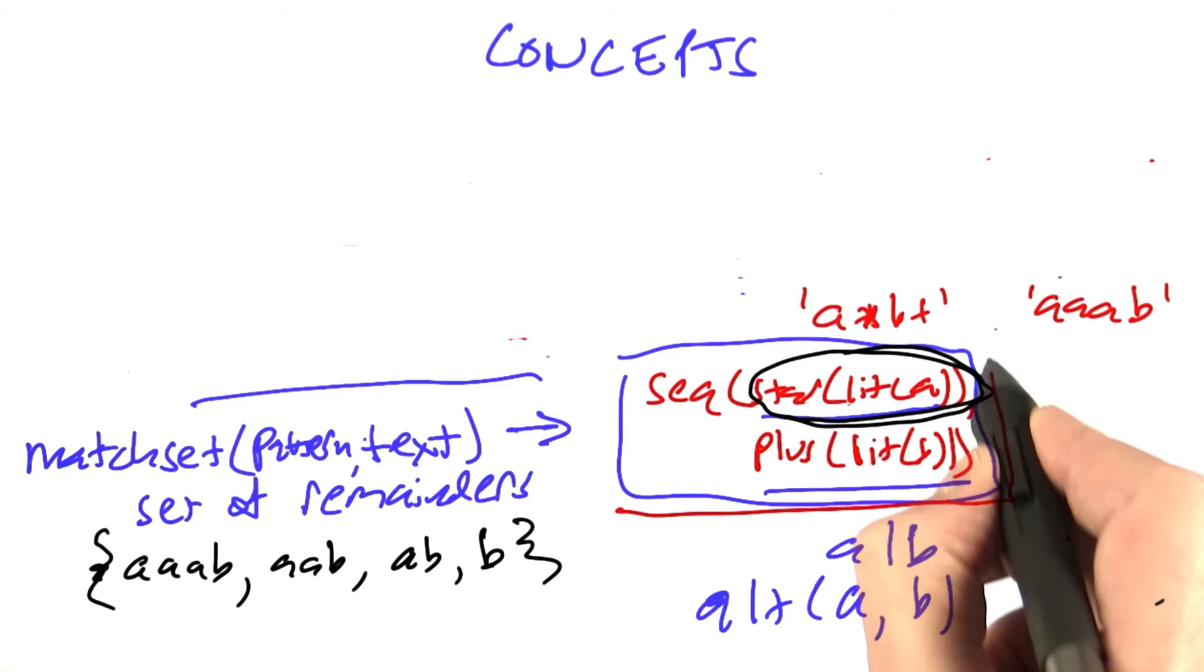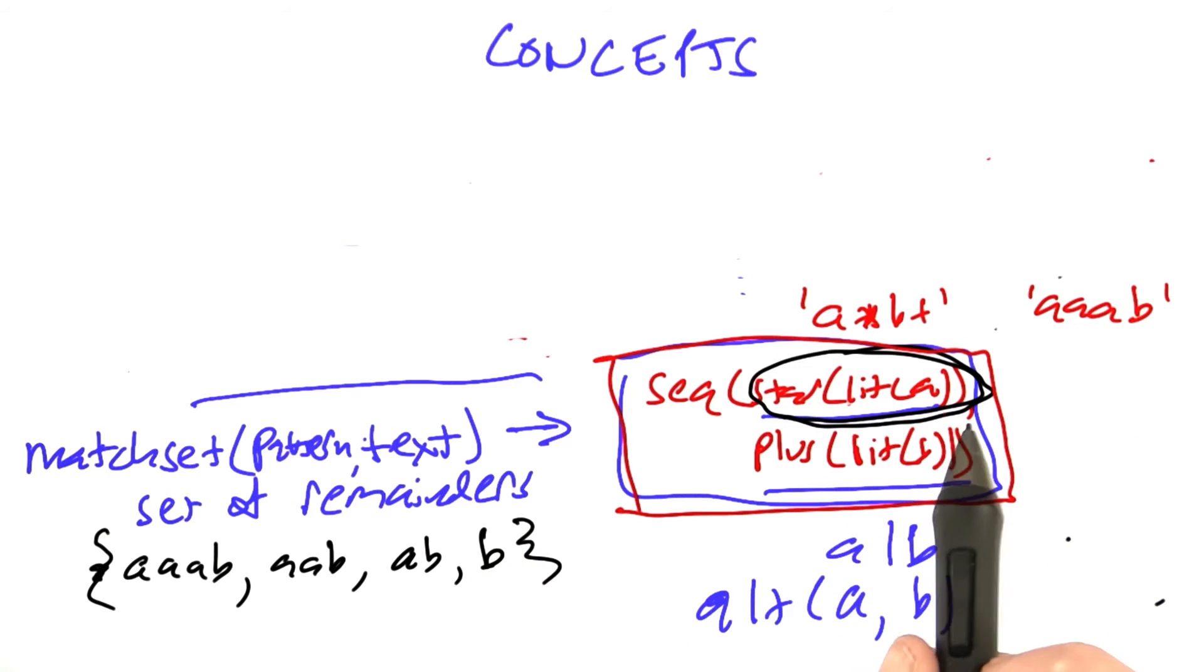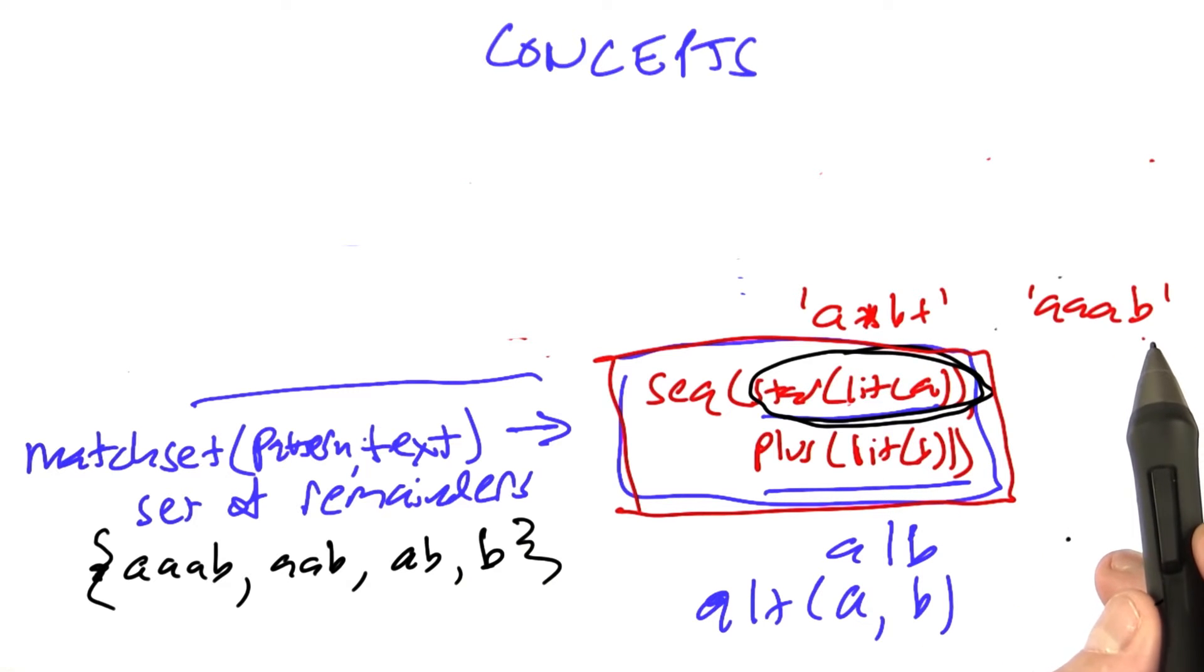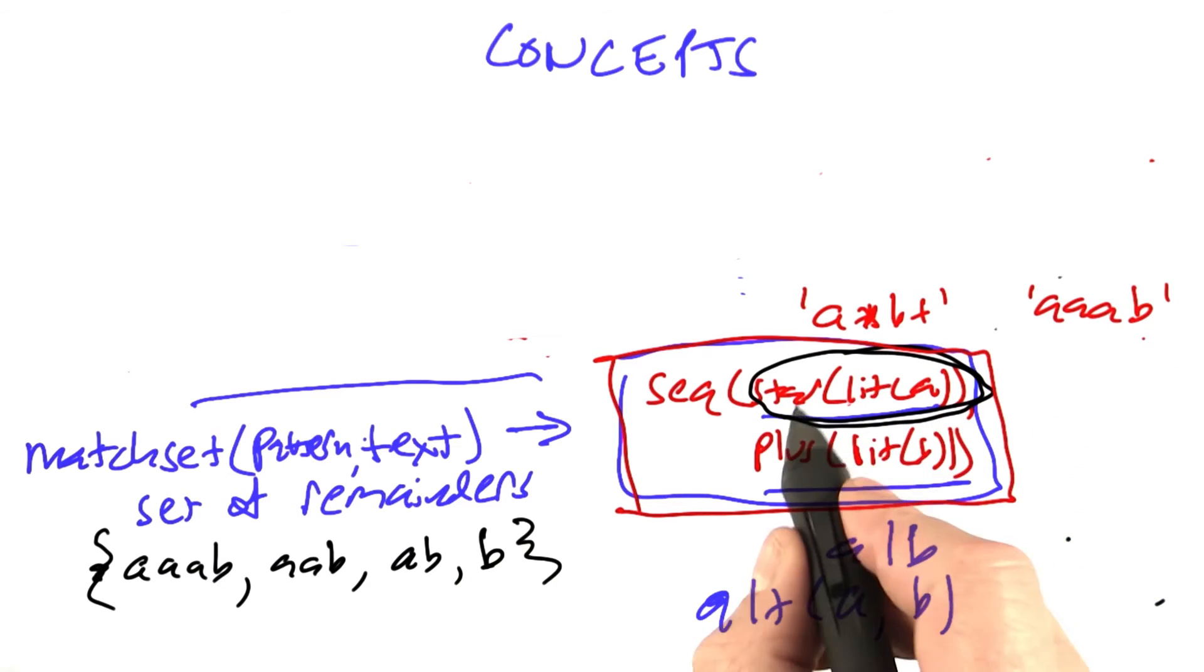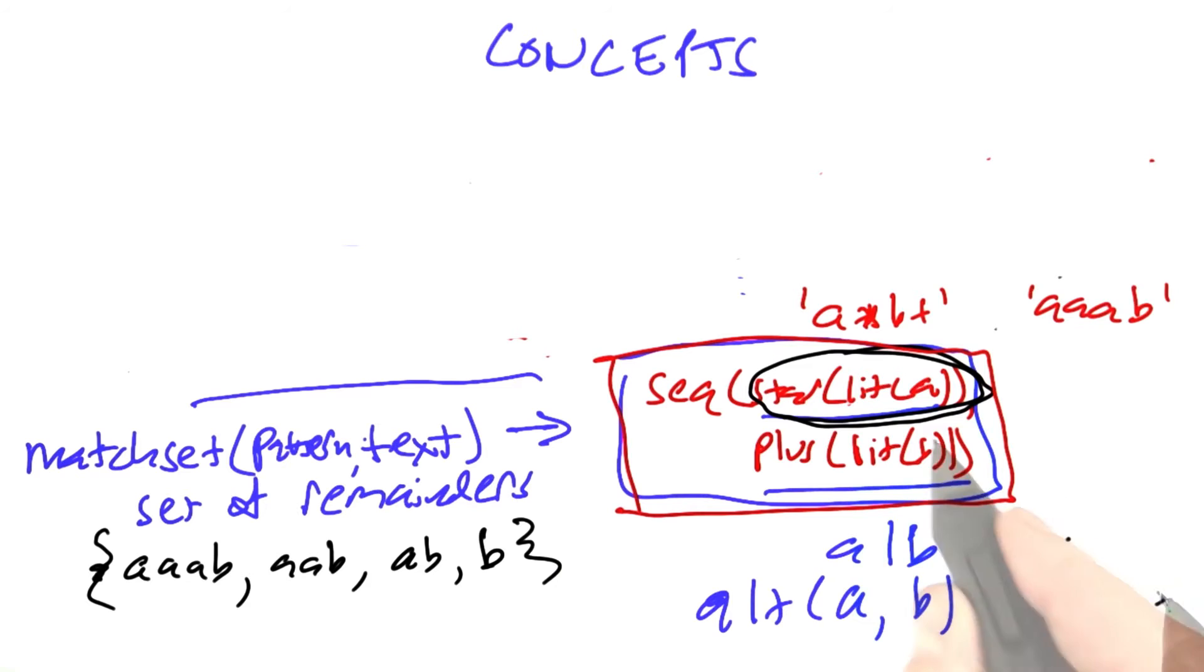For example, if this is our pattern, sequence of star literal a plus literal b, looks like that, and we're matching against aaab, then x is the star literal a, and y is the plus literal b, and the match set for x is this set here.